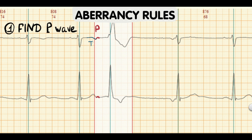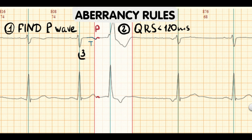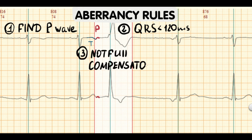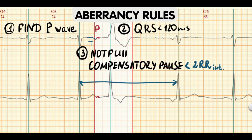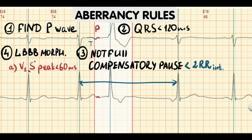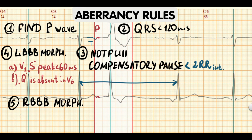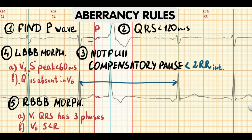Other supporting rules include: QRS duration less than 120 ms, and the absence of a full compensatory pause. For left bundle branch block morphology, there should be a fast initial deflection in V1 and absence of a Q-wave in V6. For right bundle branch block morphology, the QRS should have three phases in V1, and in V6 the S-wave should be smaller than the R-wave.